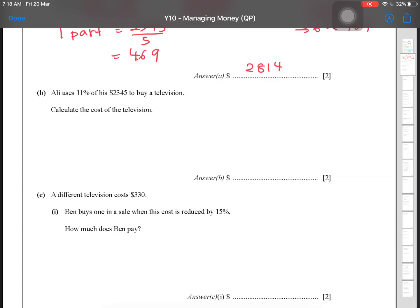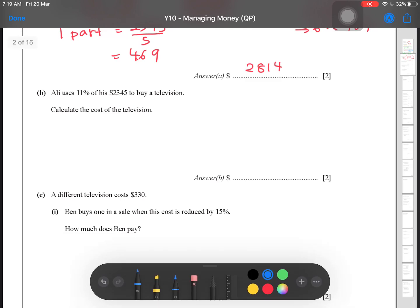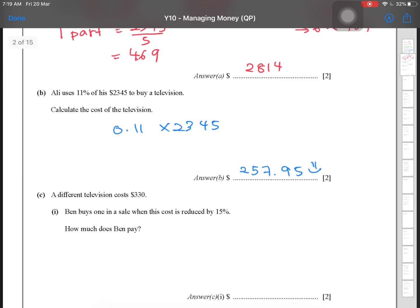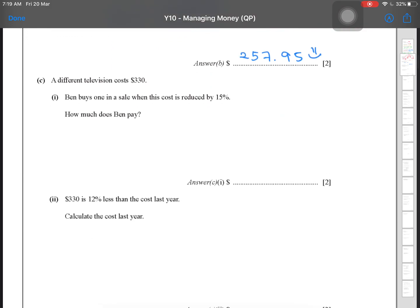Ali uses 11% to buy a television. Calculate the cost of the television. Let's stick with the multiplier. 11% is 0.11, and you multiply this straight away with 2,345. The answer is 257.95.